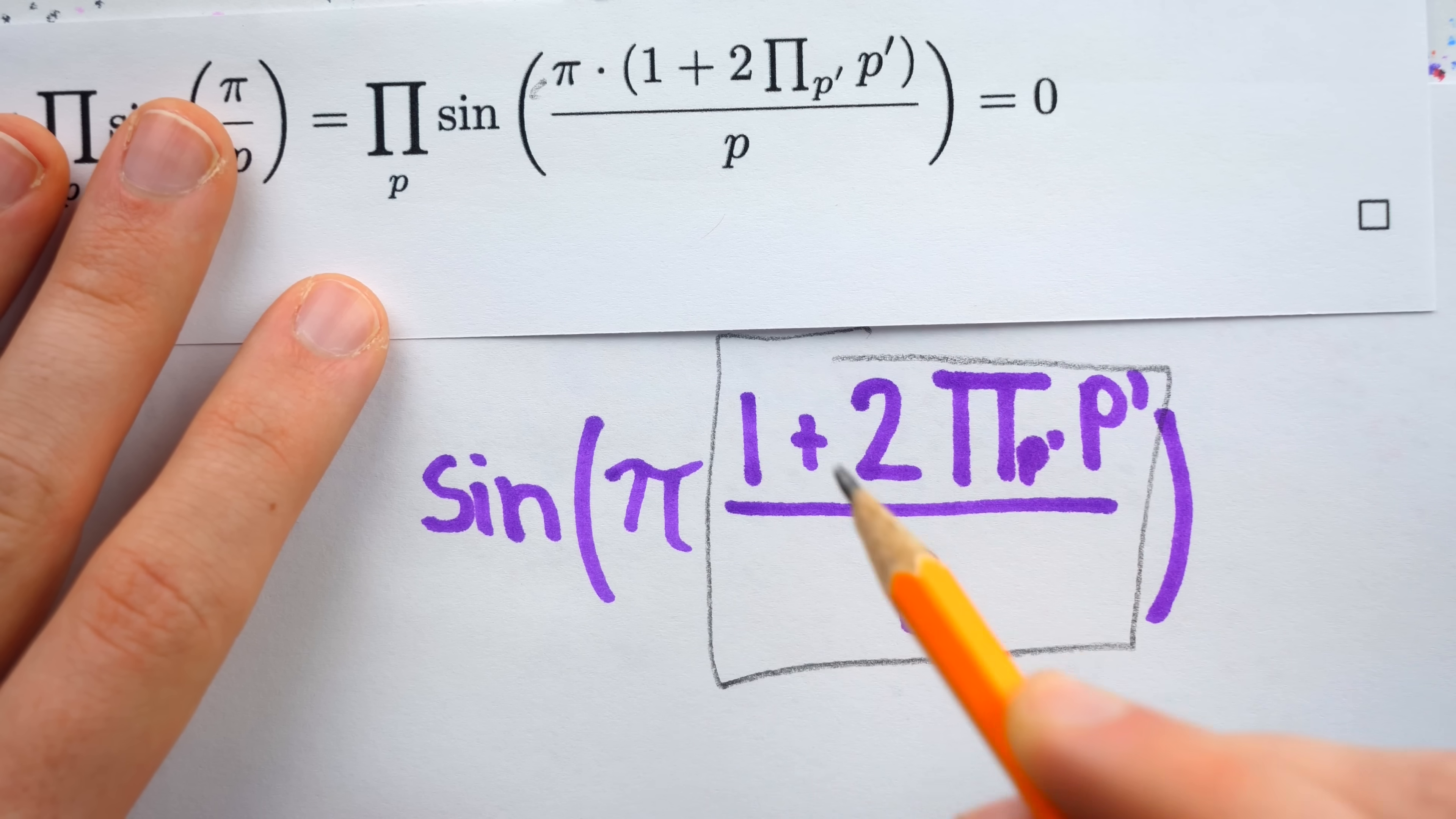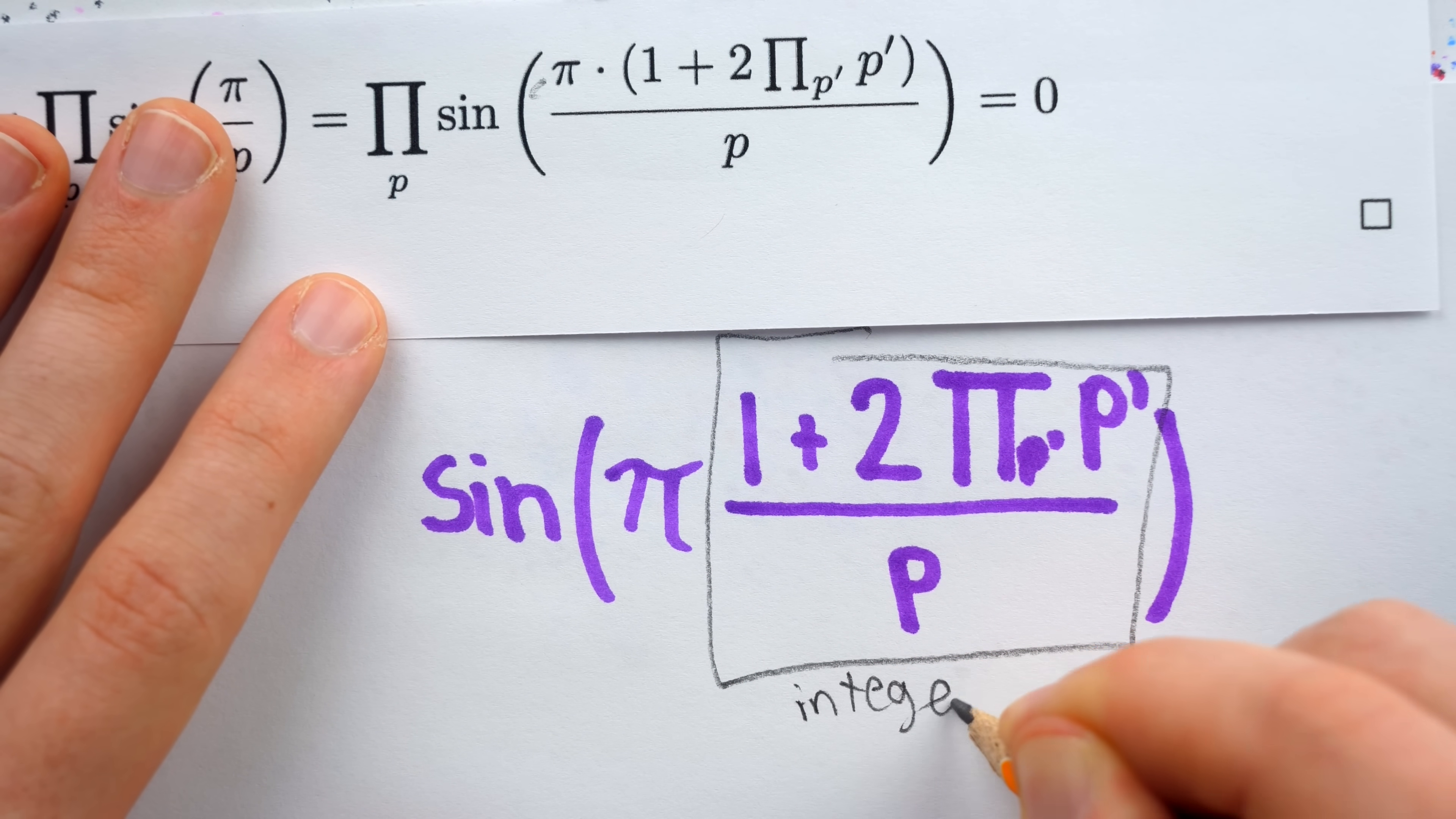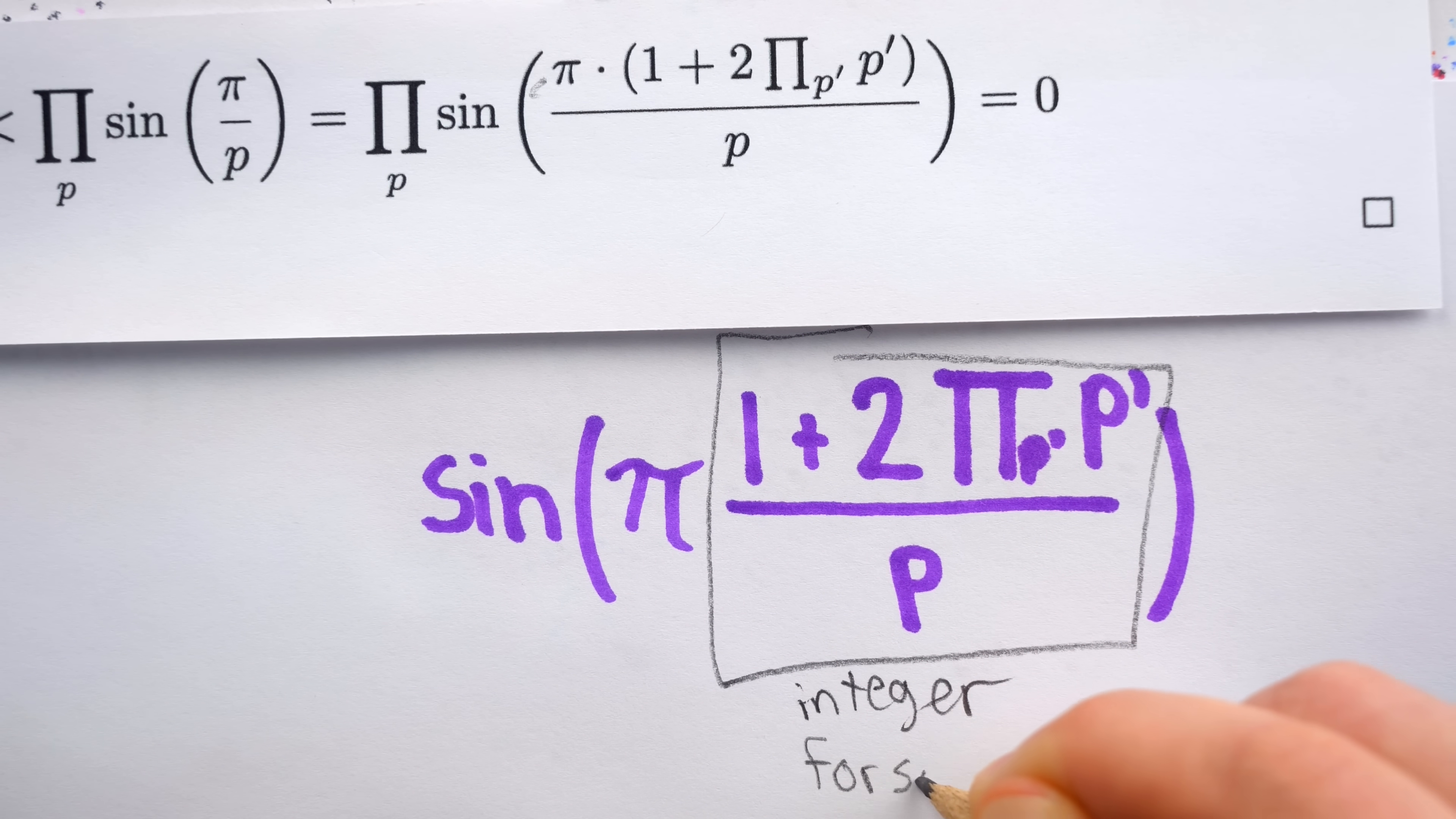And all of this stuff getting multiplied by pi, we know for sure is an integer for some prime number p.